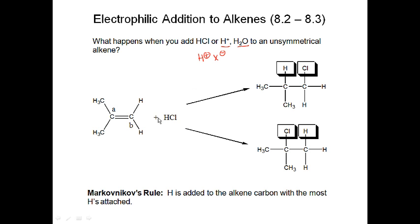The major product follows Markovnikov's rule, where H adds to the carbon with the most hydrogens and the nucleophile (X minus or water) adds to the other carbon. For instance, H+ would add to carbon B and Cl minus would add to carbon A, making that the major product.